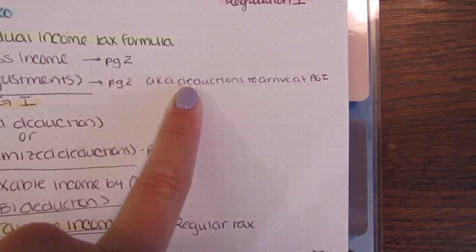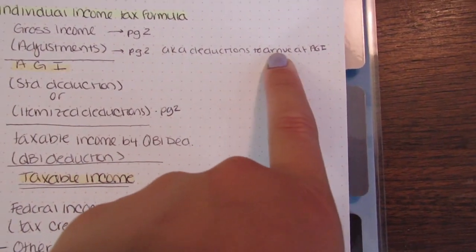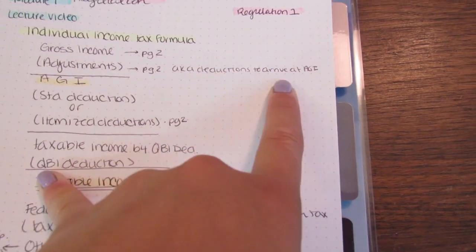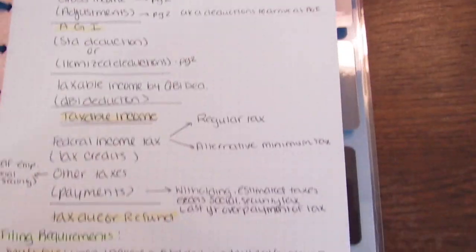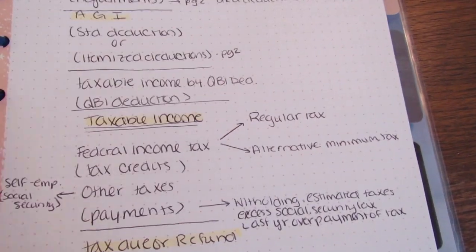Adjustments page two and then I said aka deductions to arrive at AGI. They really highlighted on the next page that it's to arrive at AGI so I made a note of it. Let me go to itemized deductions page two.